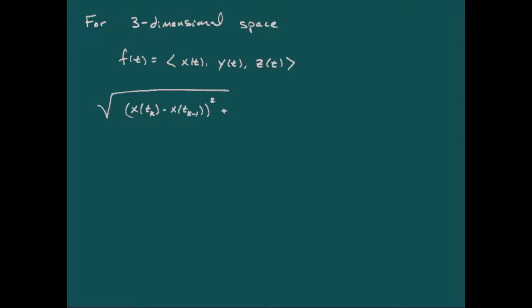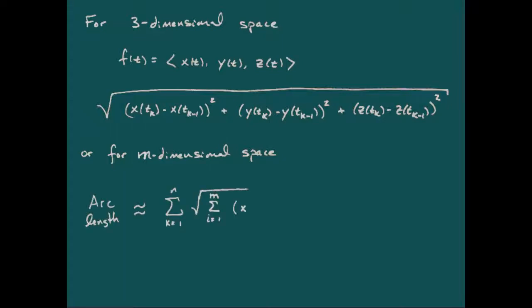Now when that went over to three dimensions, the same thing happened. We had now x, y, and z as functions of t. Still, our distance formula pretty much remained the same. And even if we go ahead and bump that up into an arbitrary m-dimensional space, then our arc length was still going to be approximated by the sum of the distances along the points on this curve that corresponded to our partition.